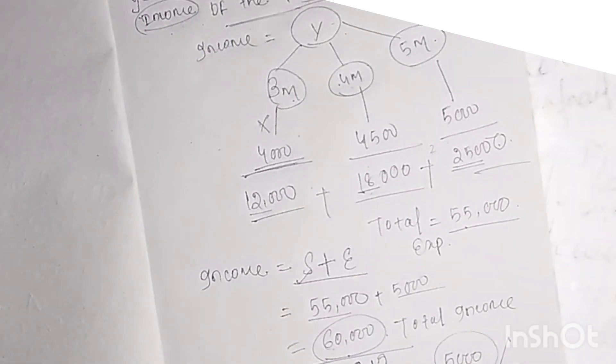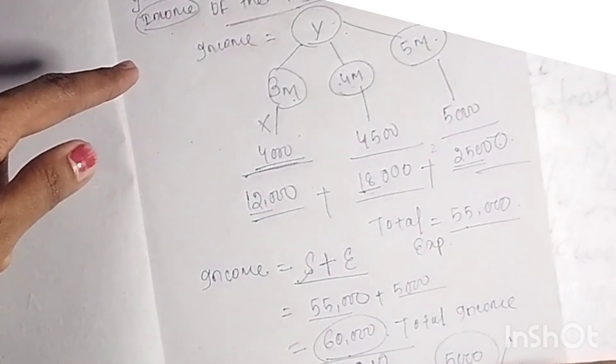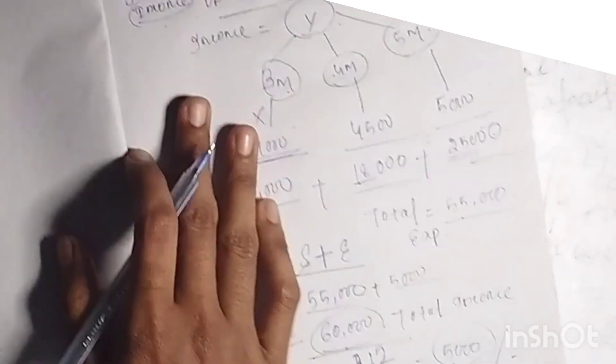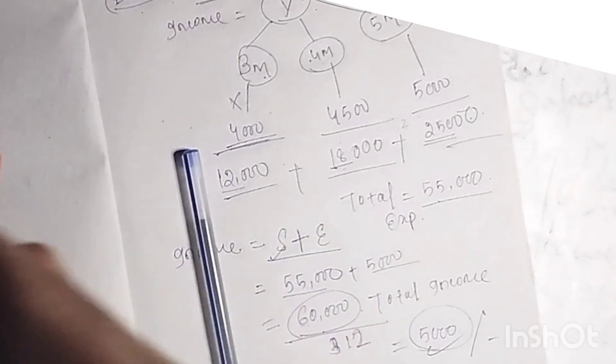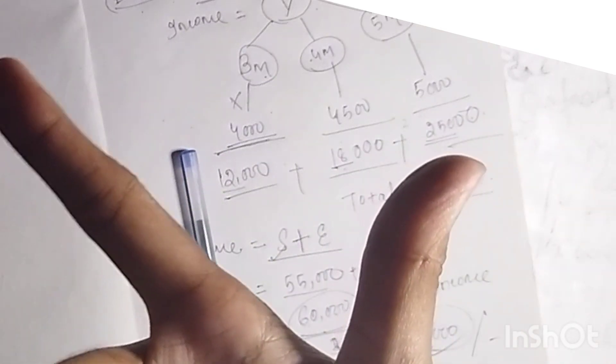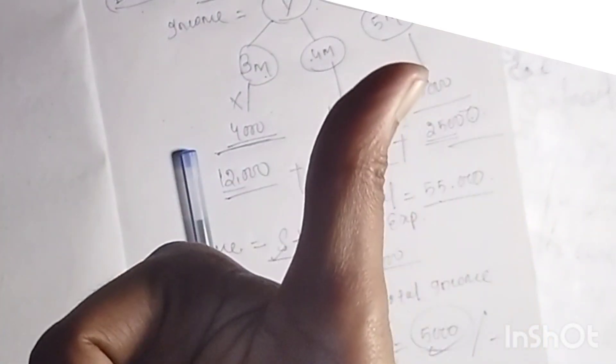The average income of the family would be 5,000 per month. I hope you understand. Thank you for watching. Please like, share, and subscribe.